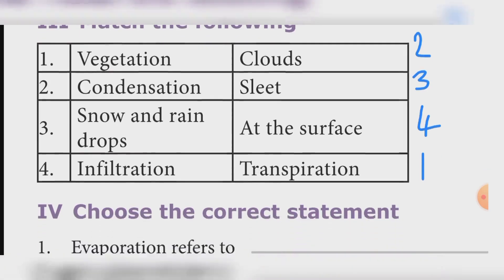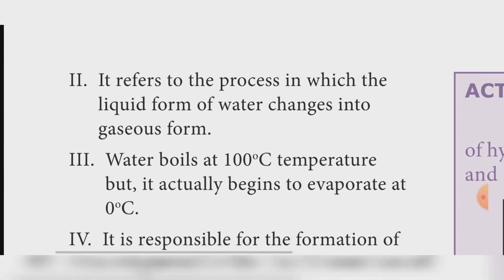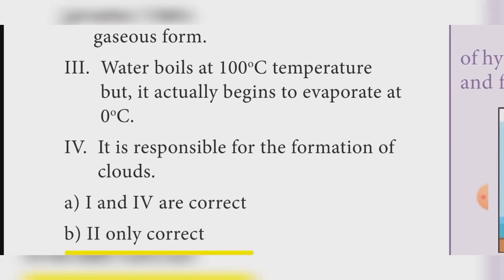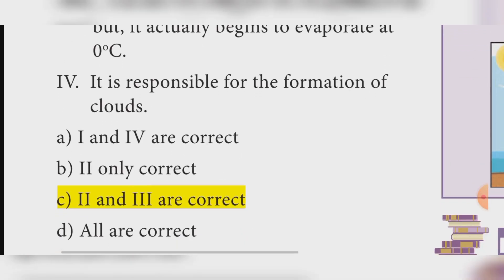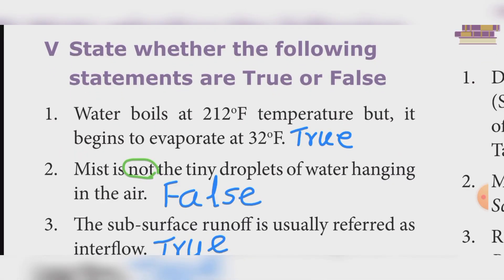Choose the correct statement about evaporation. First option: the process in which gaseous form of water changes into liquid form. Second option: the process in which liquid form of water changes into gaseous form. Third: Water boils at 100 degrees Celsius but begins to evaporate at 0 degrees Celsius. Answer: Second and third are correct. True or false: Water boils at 212 degrees Fahrenheit but begins to evaporate at 32 degrees Fahrenheit — True.